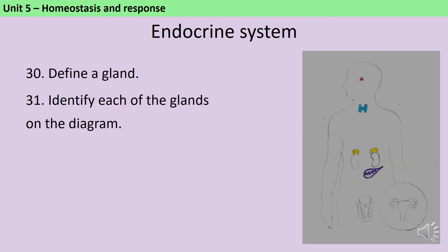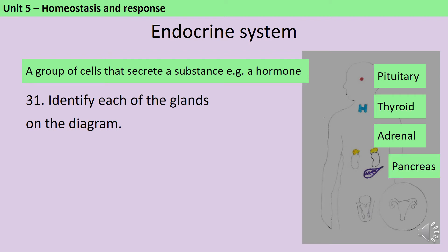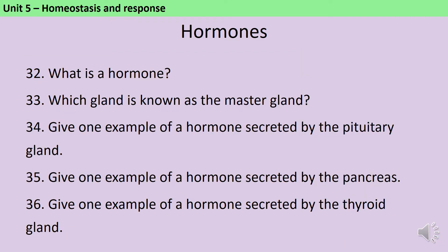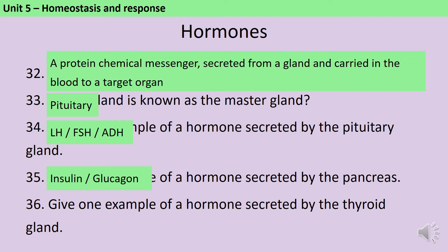A gland is a group of cells that secrete a substance, for instance a hormone. You need to be able to identify the pituitary gland in the brain just behind the bridge of the nose, the thyroid gland in the neck, the adrenal glands which sit on top of the kidneys, the pancreas, and depending on the sex of the person either the testes or the ovaries. A hormone is a chemical messenger made out of protein and secreted by a gland, carried in the bloodstream to a target organ. The master gland is the pituitary gland. The pancreas secretes insulin and glucagon, though glucagon is higher tier content only.